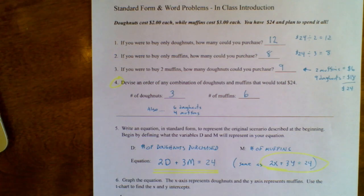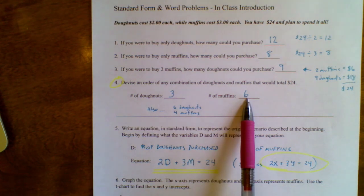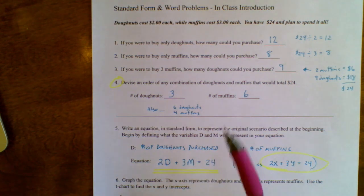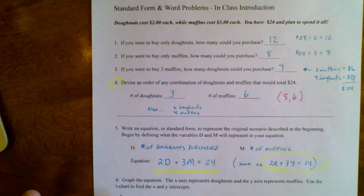And if you go back up to the top of the paper, my combination of donuts and muffins that were eligible to be purchased are 3 and 6. In other words, the ordered pair, 3 comma 6.